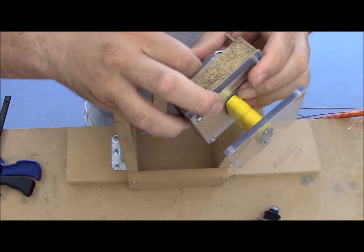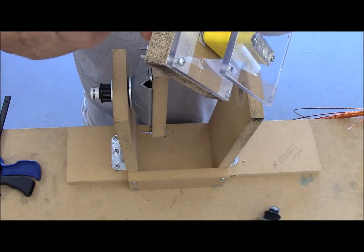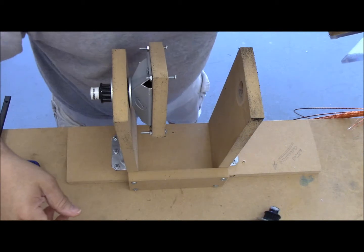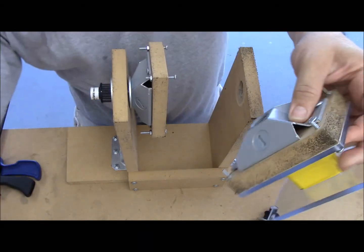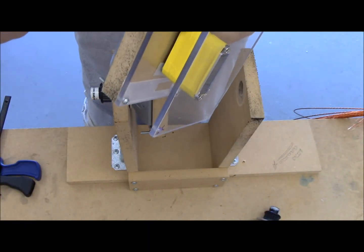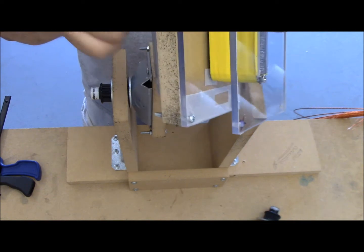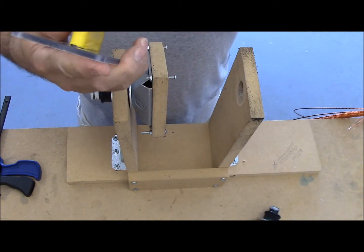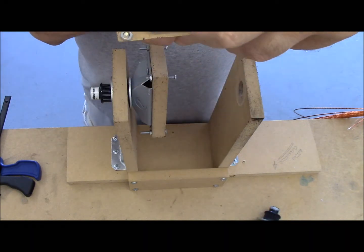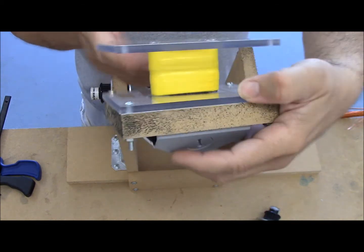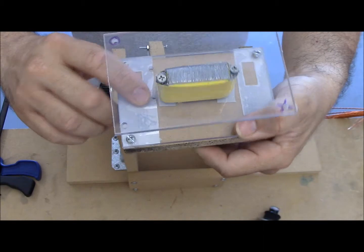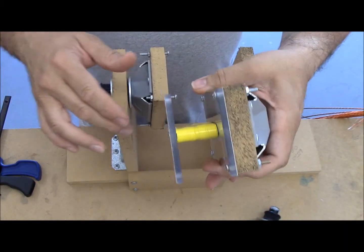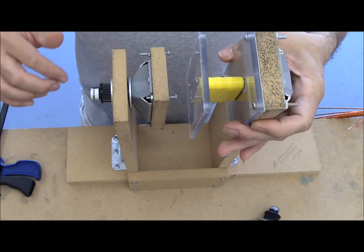The jig took about maybe an hour to make. I have to tell you the hardest part about this whole project is probably making the jigs. Once you have the jigs you're pretty much off to the races. Now that I've had to make more coils, it's just a matter of pulling out the jig and getting it up and running. So the orange hole here is lined up with the hole that the wire is going to go through.